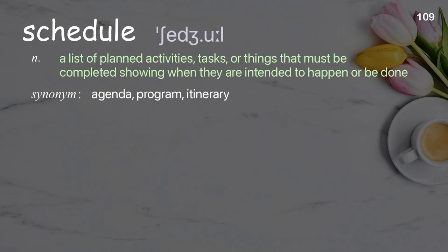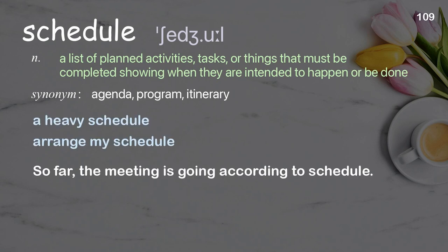Schedule: a list of planned activities, tasks, or things that must be completed showing when they are intended to happen or be done. Examples: A heavy schedule. Arrange my schedule. So far, the meeting is going according to schedule.